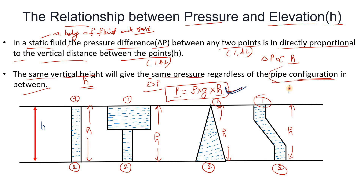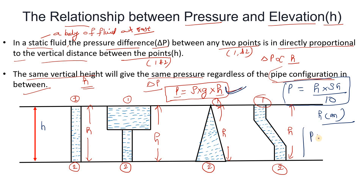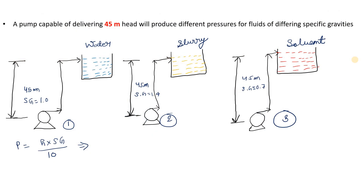There is also another formula to find static pressure: p equals h times specific gravity divided by 10. You use this formula when your head is in meters and the pressure unit will be bar. When your head is in feet, the formula is: p equals feet times specific gravity divided by 2.31, and the pressure unit will be psi.